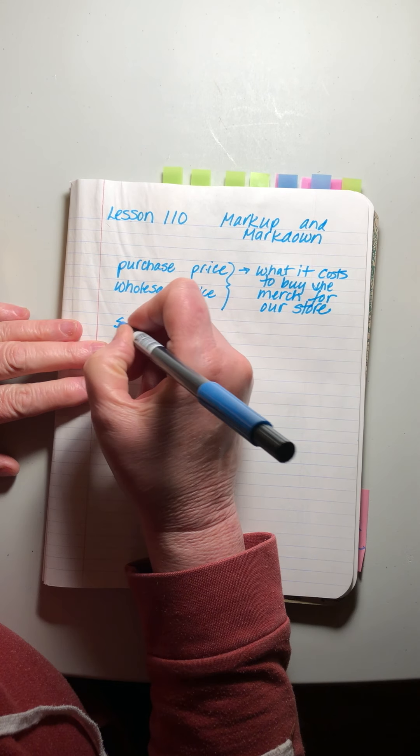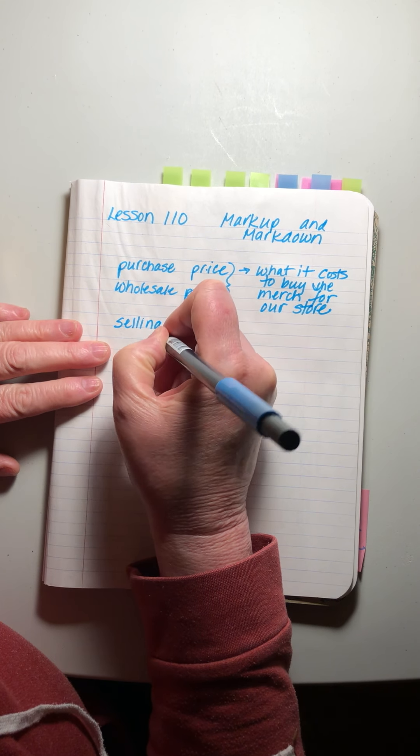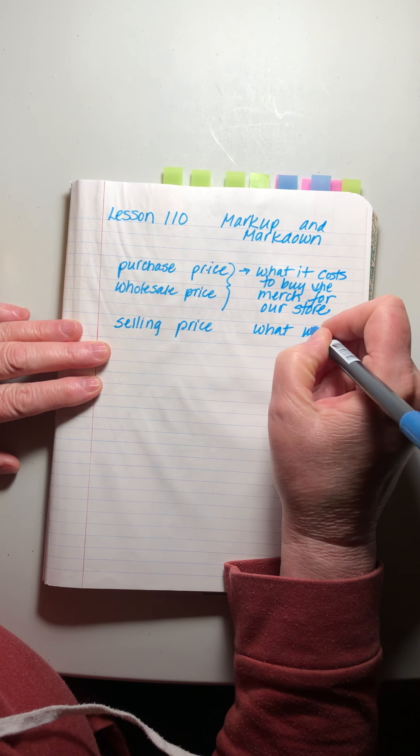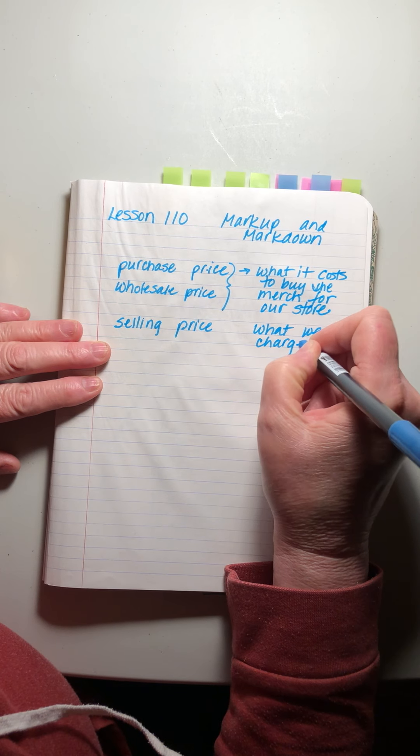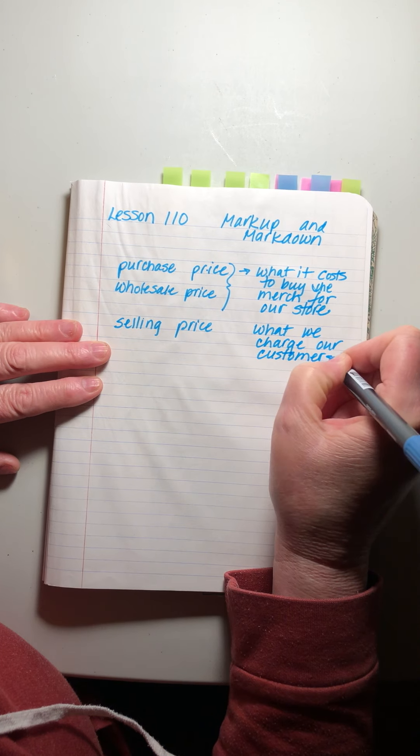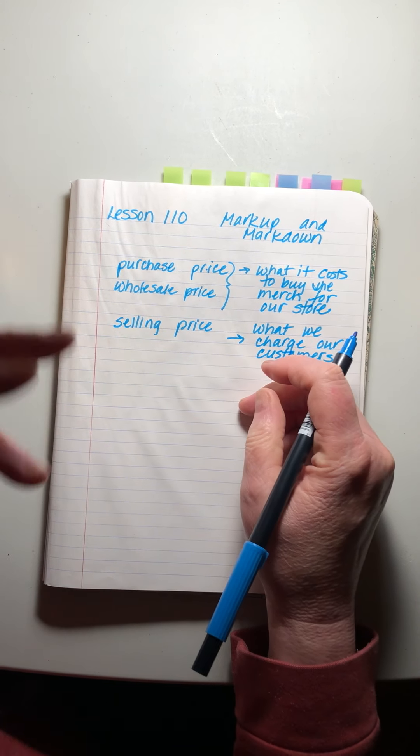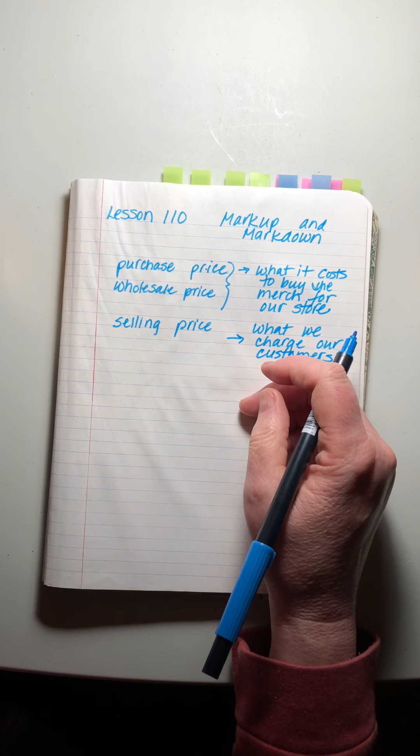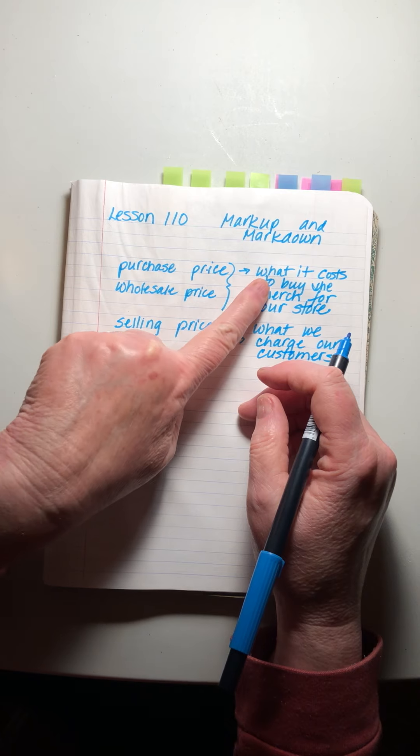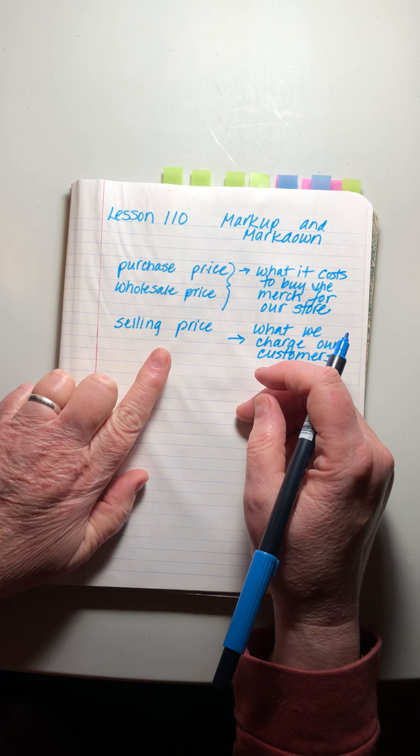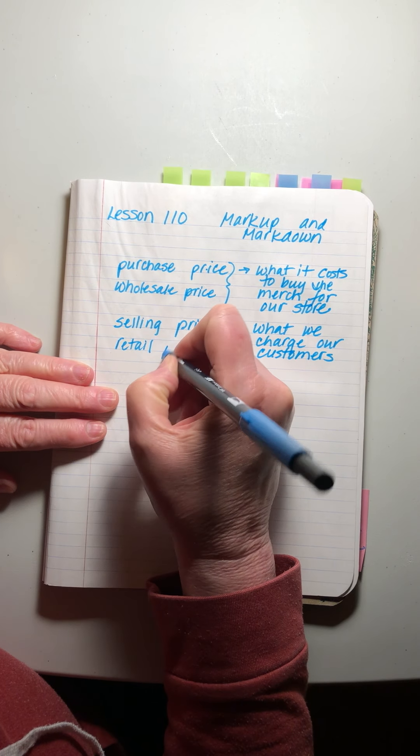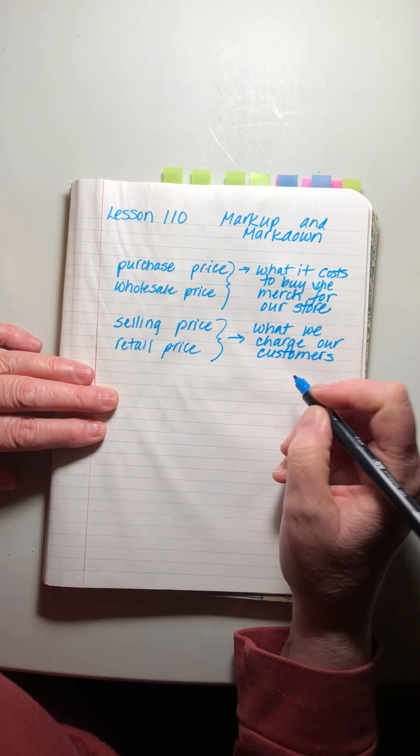There's also something called the selling price. That is what we charge our customers. When someone comes into Zummiez and wants to buy one of our North Face jackets, they won't find the purchase price or the wholesale price on the tag - they'll find the selling price. That's sometimes called the retail price.